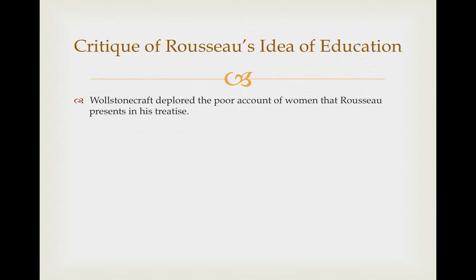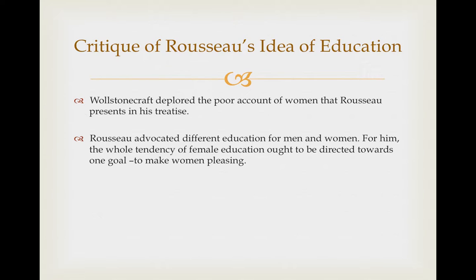In as much as Wollstonecraft applauded Rousseau's scheme in Emile, she deplored the poor account of women that Rousseau presents in his treatise. In Emile, he writes about the difference between what he believes women and men need in education. Since the main purpose in life, to Rousseau, is for a woman to be a wife and mother, she doesn't need to be educated to the extent that men traditionally have. Instead, he maintained that the whole tendency of female education ought to be directed towards one goal: to make women pleasing.